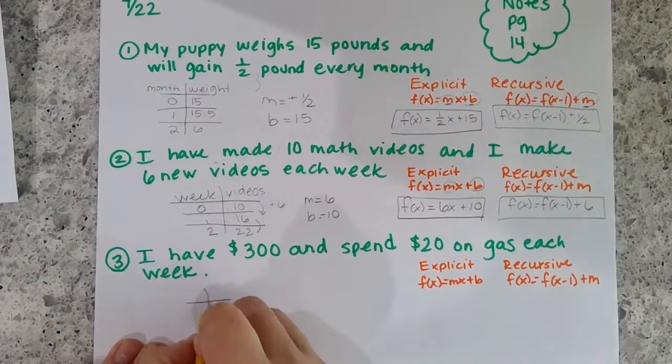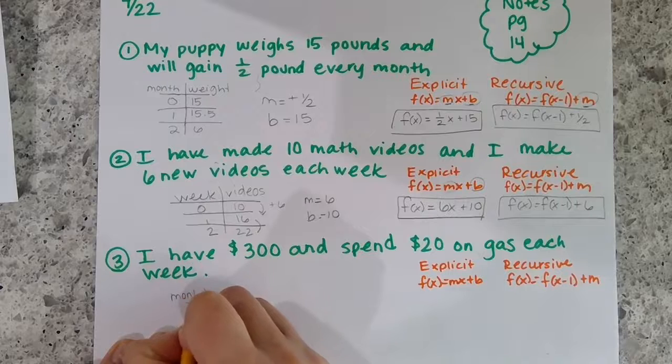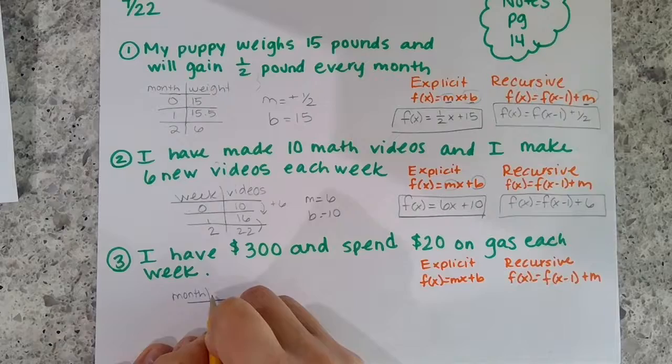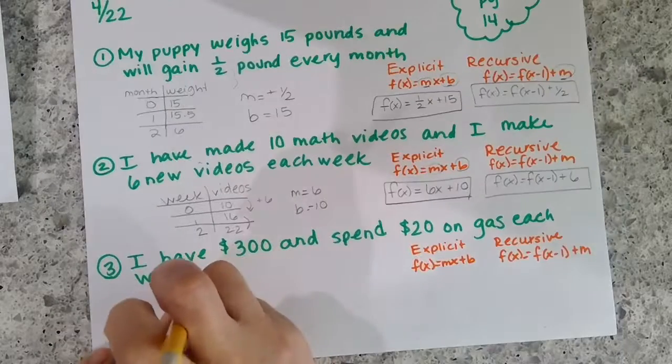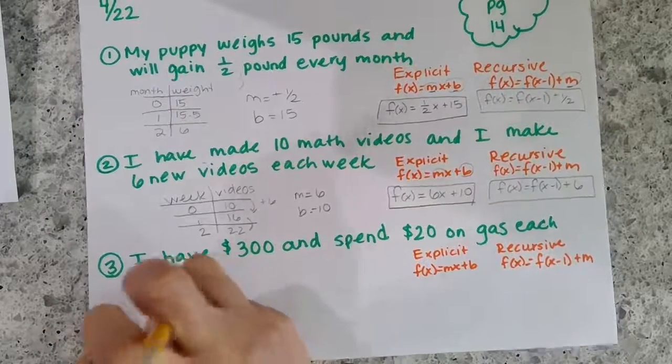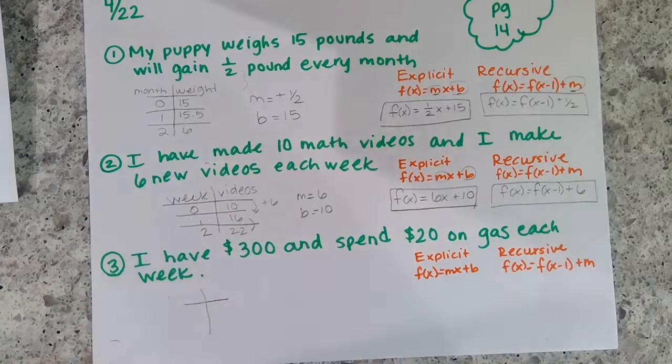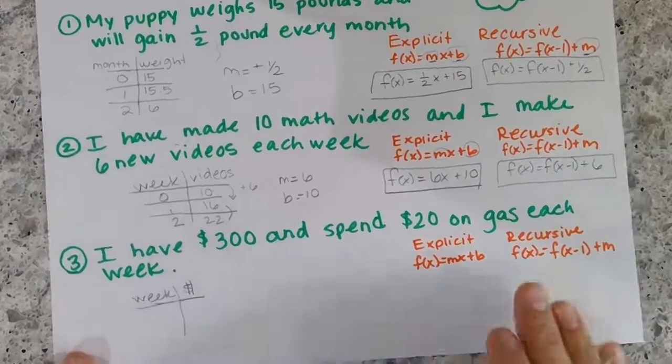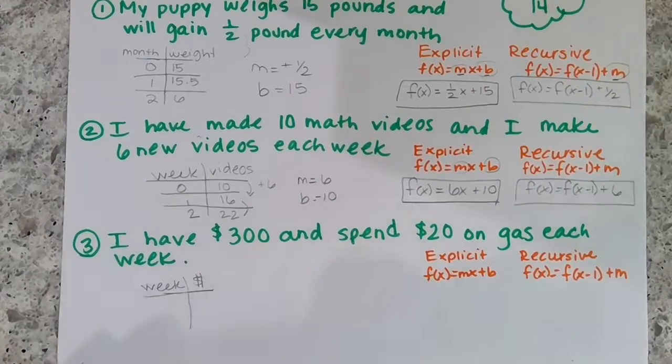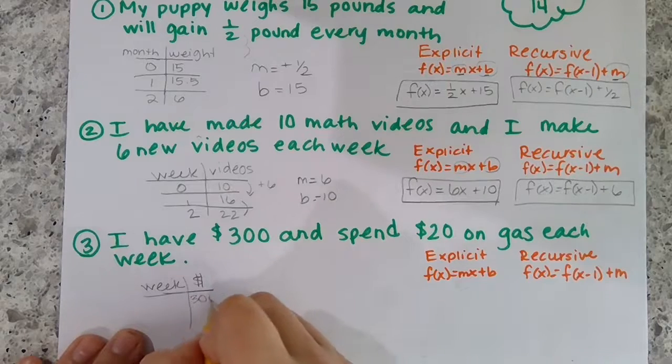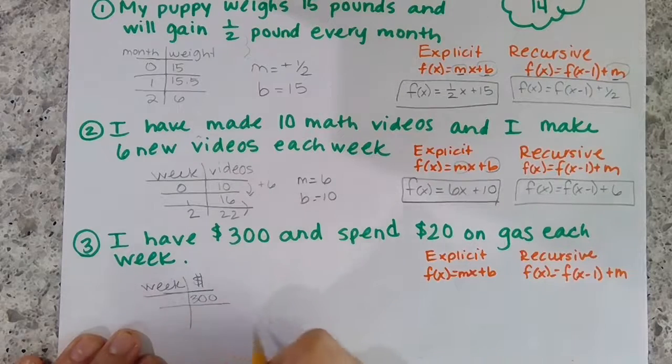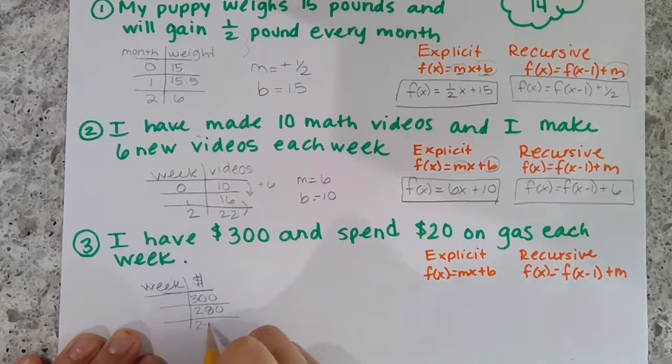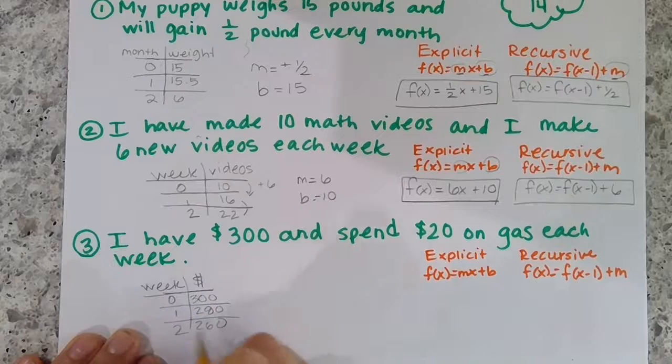Next problem says I have three hundred dollars and I'm spending twenty dollars on gas each week. Let me change this label to weeks and money. Okay, so weeks: in the beginning I had three hundred dollars and I'm spending twenty dollars, so how much will I have the next week? 280, then 260. In the beginning, after first week, second week.